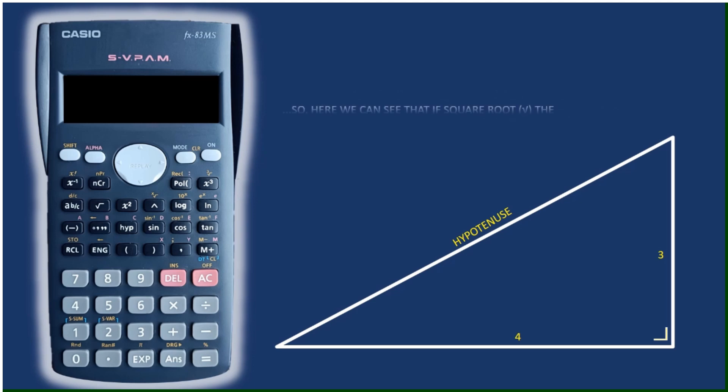So obviously the hypotenuse can't be 25 of course because that'll be way too long. Common sense will tell you looking at the right angle triangle there's no way it's 25.